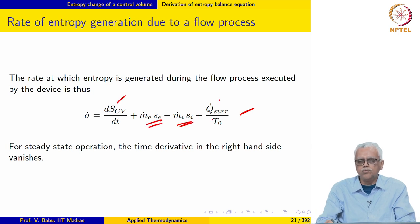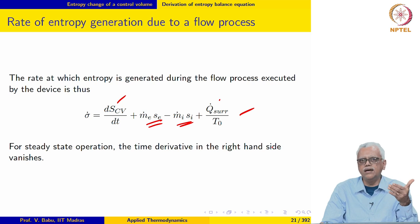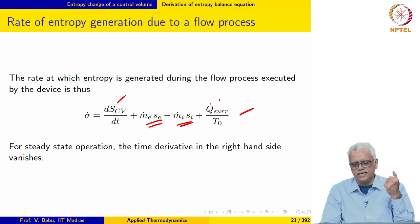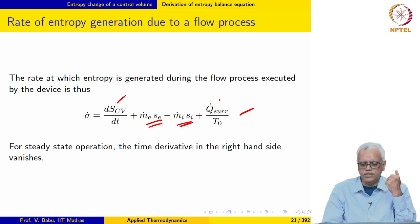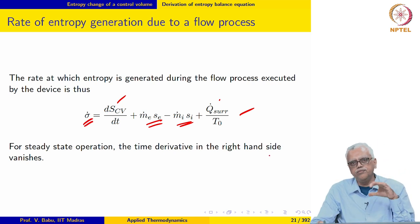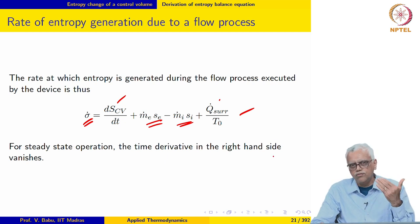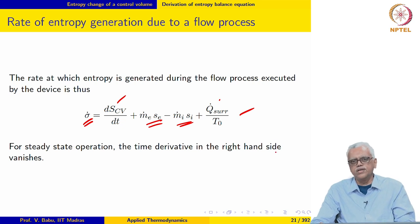This expression takes into account entropy generation due to both internal irreversibility as well as external irreversibility — it is the rate of change of entropy within the universe itself. This is a very important performance metric for the device or the process that the working substance executes inside the device.